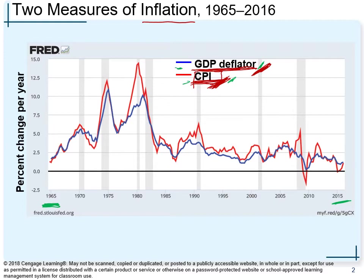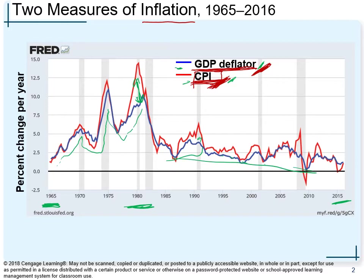You can see the consumer price index and GDP deflator inflation rates moving together across the graph. There is a big spike in inflation rate where both CPI and GDP deflator increase, then a decrease. There is also a notable gap between consumer price index and GDP deflator inflation rates in one period, and then little gaps at other points — though most of the time they move together.